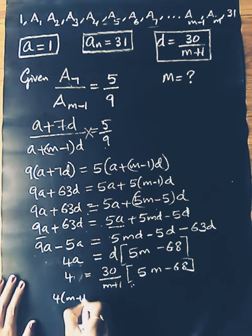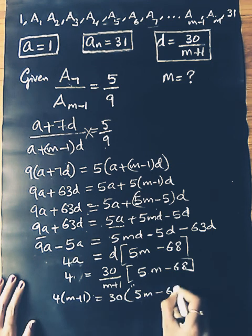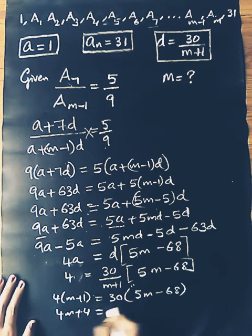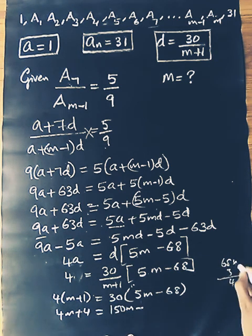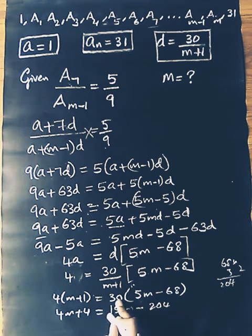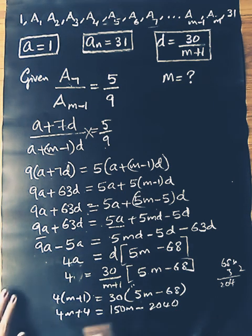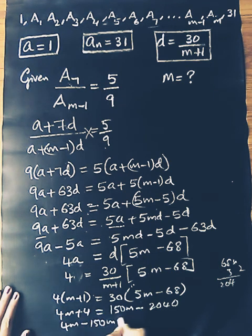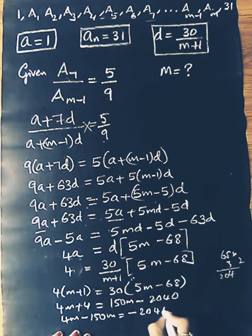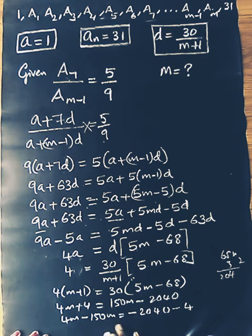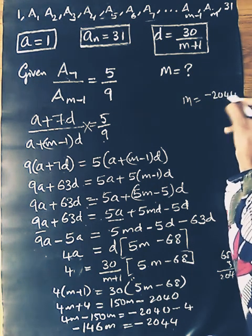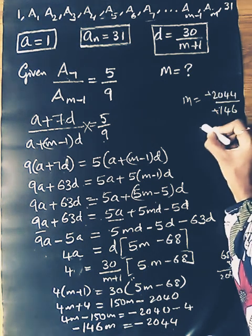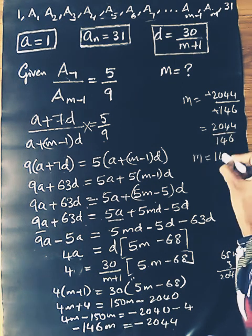Substituting A equals 1: 4 into (M+1) equals 30 into (5M minus 68). Expanding the left side gives 4M plus 4. The right side gives 150M minus 2040. Solving this equation yields the value of M.